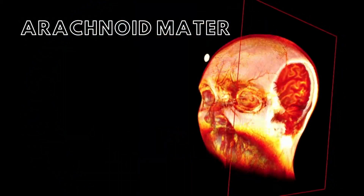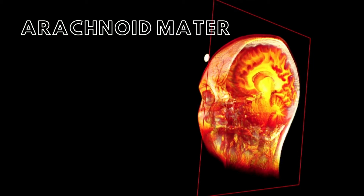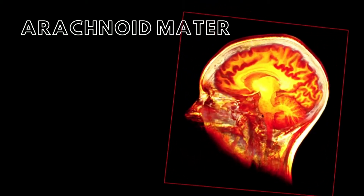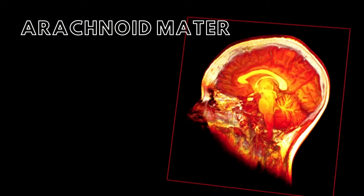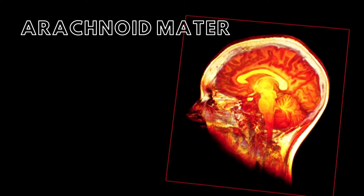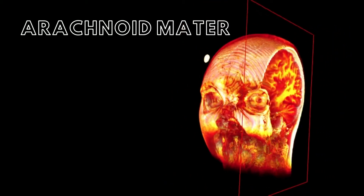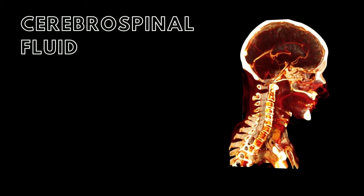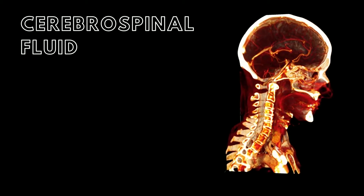The next layer of the meninges, deep to the dura mater and superficial to the pia mater, is the arachnoid mater. The arachnoid mater is composed of simple squamous epithelium. Deep to the arachnoid mater is the subarachnoid space, which contains web-like extensions connecting the arachnoid to the pia mater. Cerebrospinal fluid, abbreviated as CSF, fills the subarachnoid space.